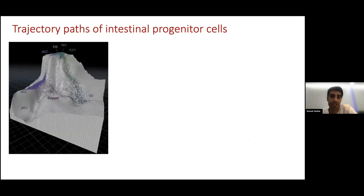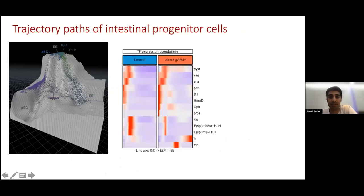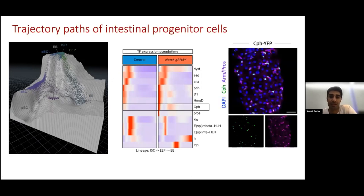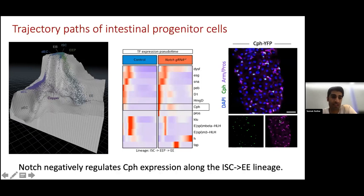We can visualize the shift in differentiation using trajectory profiles. Here I'm showing a 3D trajectory profile of the notch-perturbed condition, showing that the intestinal stem cells are differentiating towards enteroendocrine cells. To understand the mechanism of how this shift is happening, we looked at differentially expressed genes along this trajectory. One gene that caught our attention was called Cronophage, or CPH, because under homeostasis it was specifically expressed in the progenitor stem cell population, and when notch was lost, it increased expression in the enteroendocrine progenitor population. Using a CPH endogenous tag line, we verified that CPH was expressed in the stem cells, shown here in magenta, and concluded that notch signaling negatively regulates the expression of CPH along the ISC-to-EE lineage.